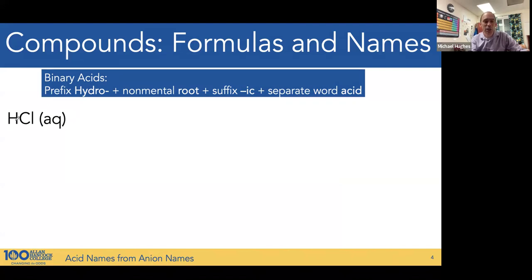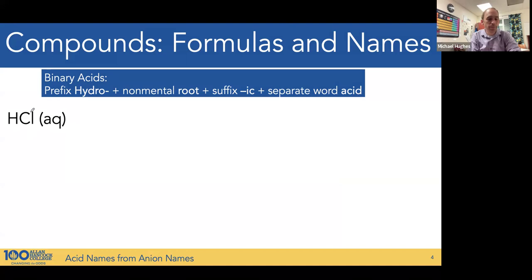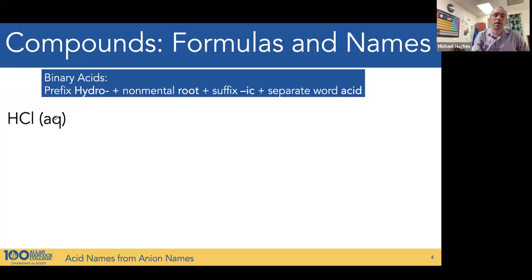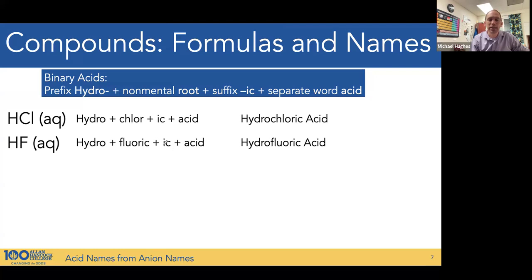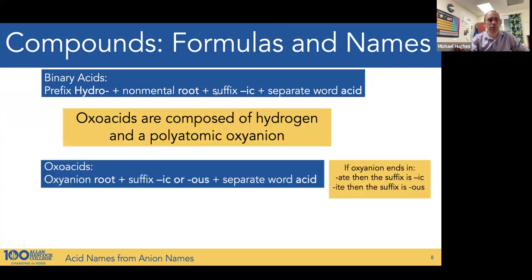Here we have hydrogen as a cation and an aqueous species — both indicators of an acid. The anion is a monoatomic non-metal anion, so this is a binary acid, and we would call it hydrochloric acid. HF is again a binary acid with just a single monoatomic anion species, hydrogen as the cation — hydrofluoric acid.